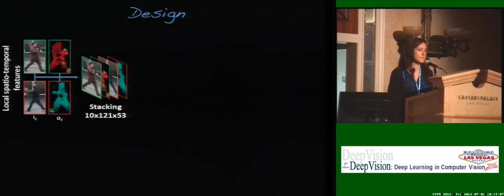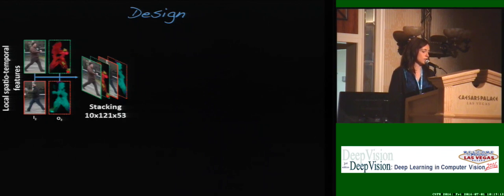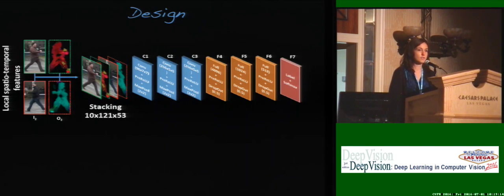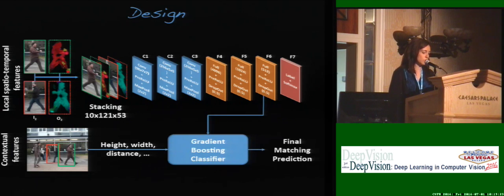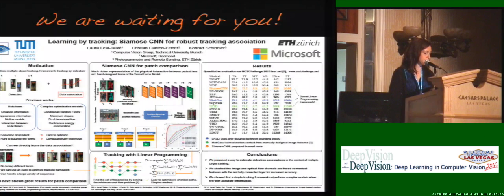The final design we have is to stack the image and also the optical flow, then pass it through the network. At the same time, we also add contextual features such as height and width of the bounding box and distance between bounding boxes, which we incorporate at a later stage with a linear classifier.